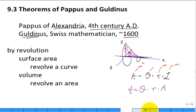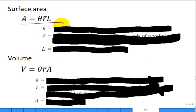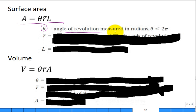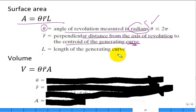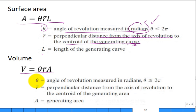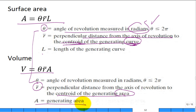Here the equations are repeated. For surface area: theta is the angle of revolution between 0 and 2π in radians; R-bar is the perpendicular distance from the axis of revolution to the centroid of the curve; and L is the length of the generating curve. Likewise for volume: same angle of revolution, but now the perpendicular distance goes to the centroid of the area instead of the centroid of the curve, times the generating area being revolved.